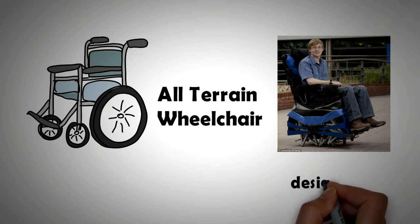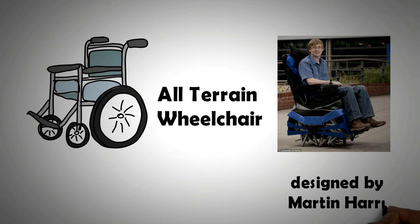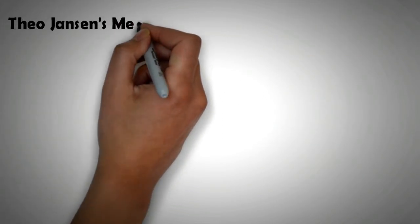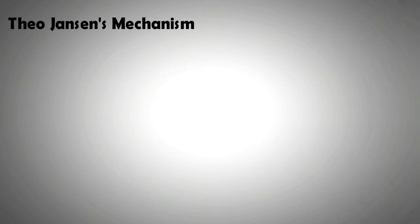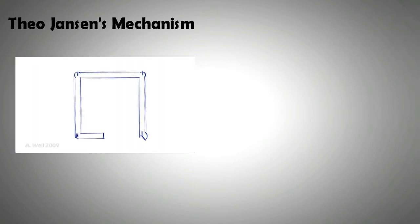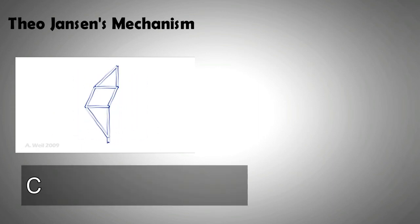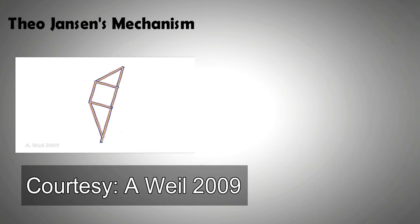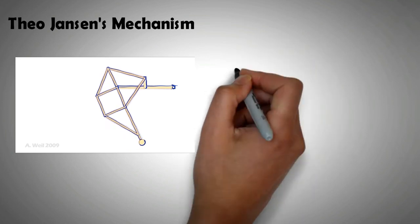The beauty of Theo Jansen's mechanism is the simplicity of its design. It can be made easily from a variety of materials at any scale. It is smooth in movement and energy efficient and has a low payload to machine load ratio. Added features like shock absorbers can make it even more robust and versatile. It does not require any hydraulics or sophisticated machinery to function.